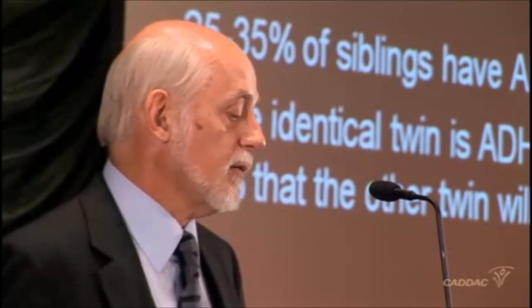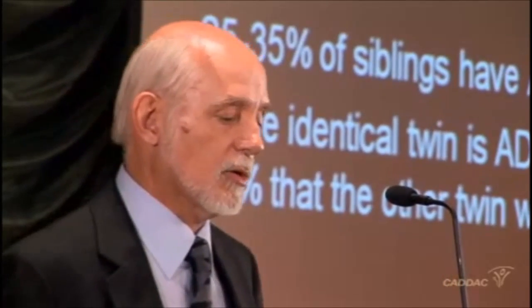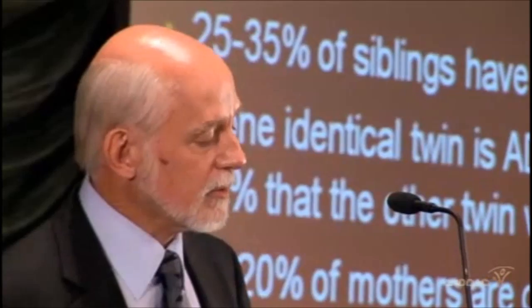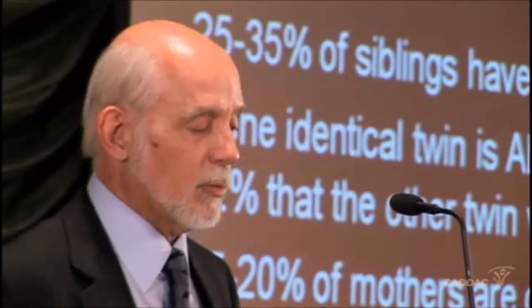We know that ADHD runs in families and have for 40 years. Here are the risks if you have an ADHD child: 25 to 35 percent of their brothers and sisters will have the same disorder. If you're an identical twin, that risk is 78 to 92 percent. The closer people are genetically related, the higher the risk. If we bring in their mothers and evaluate them, upwards of one-fifth of their mothers are still adults with ADHD, and nearly a third of their fathers are currently ADHD. That means there's a 50 percent chance that one of the parents sitting across your desk has the same disorder — probably never diagnosed — which is why clinicians should be screening every parent that brings a child to the clinic. And if you're an adult with ADHD, 40 to 54 percent of your children will have the same disorder. That is a profoundly genetic disorder.